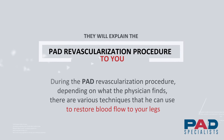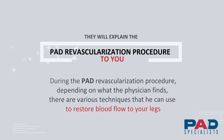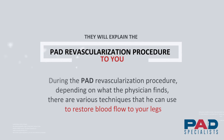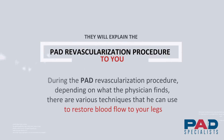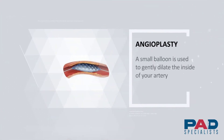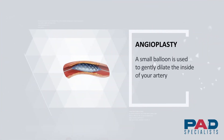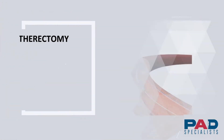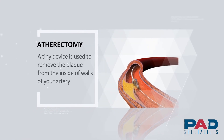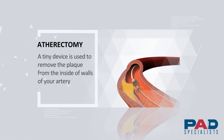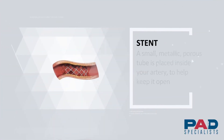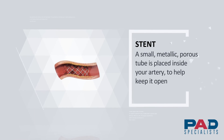During the PAD revascularization procedure, depending on what the physician finds, there are various techniques he can use to restore blood flow to your legs. Angioplasty: a small balloon is used to gently dilate the inside of your artery. Atherectomy: a tiny device is used to remove the plaque from inside the walls of your artery. Stent: a small, metallic, porous tube is placed inside your artery to help keep it open.